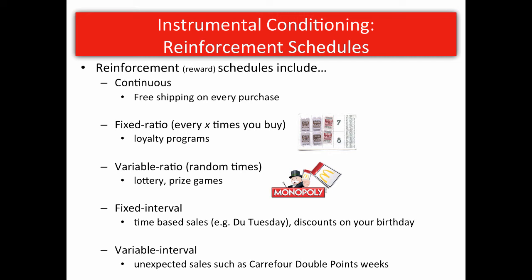More interesting is fixed ratio — every X number of times you purchase, you get rewarded. For example, every eight Subways you buy, you get a free sub. Most loyalty programs operate this way: every thousand dirhams spent earns a hundred dirhams back, or every ten coffees gets you a free coffee. This is effective because it reinforces the behaviour and encourages you to spend more — more Subway purchases means more points, more plane tickets means more Skywards miles.